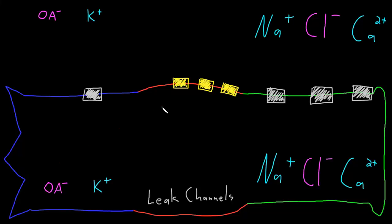In this video, I want to talk about how the neuron resting potential is created, and how it relates to concentration differences in some of the important ions involved in neuron function. Understanding the concepts involved in the neuron resting potential will help us understand other neuron membrane potential changes, like the graded potentials and the action potentials.